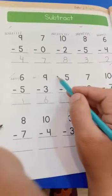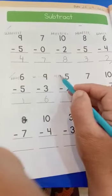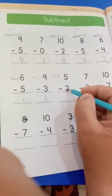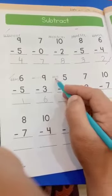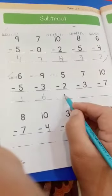Same like that: 1, 2, 3, 4, 5. 5 minus 2: 1, 2. 1, 2, 3 left. Write down over here, 3.